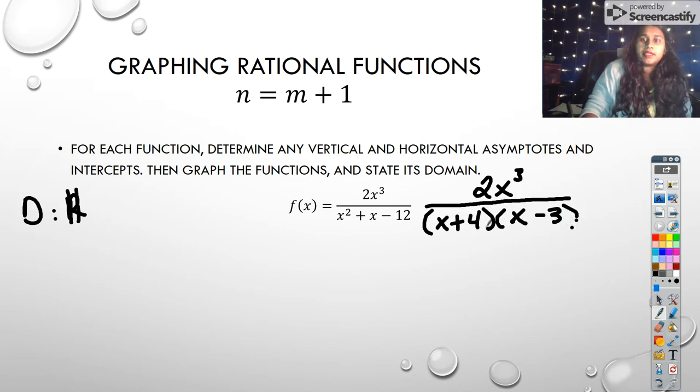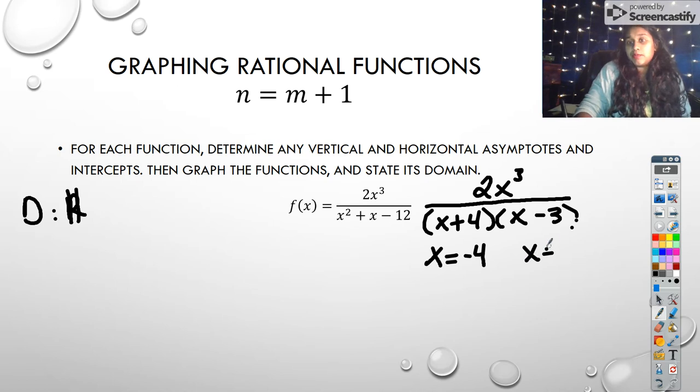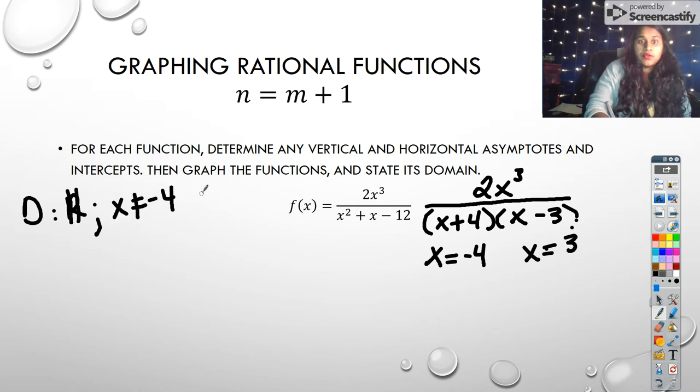Okay. Now I look at this, I compare it to my top. I can't cancel anything out, but I can see that at this point, x equals negative four. And at this point, x equals positive three, that we have some funkiness happening. So that tells me my domain is going to be all except at x equals negative four and at x equals three, we can't have that.